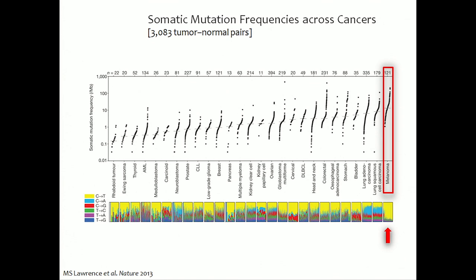What have we learned through next-generation sequencing about UV and melanoma? A study published in Nature a couple years ago, with many subsequent publications showing the same solid results, looked at somatic mutation frequencies across cancers — 3,000 tumor-normal pairs. Somatic mutation frequencies are reported per megabase. Childhood tumors like AML and medulloblastoma have about one mutation per MB; breast cancer has about 10 mutations per MB; pancreas and ovarian are similar. The cancer with the highest mutation load, all the way to the far right, is melanoma — hundreds of mutations per MB, equating to about 1,000 mutations in the tumor. Second to melanoma is lung cancer.